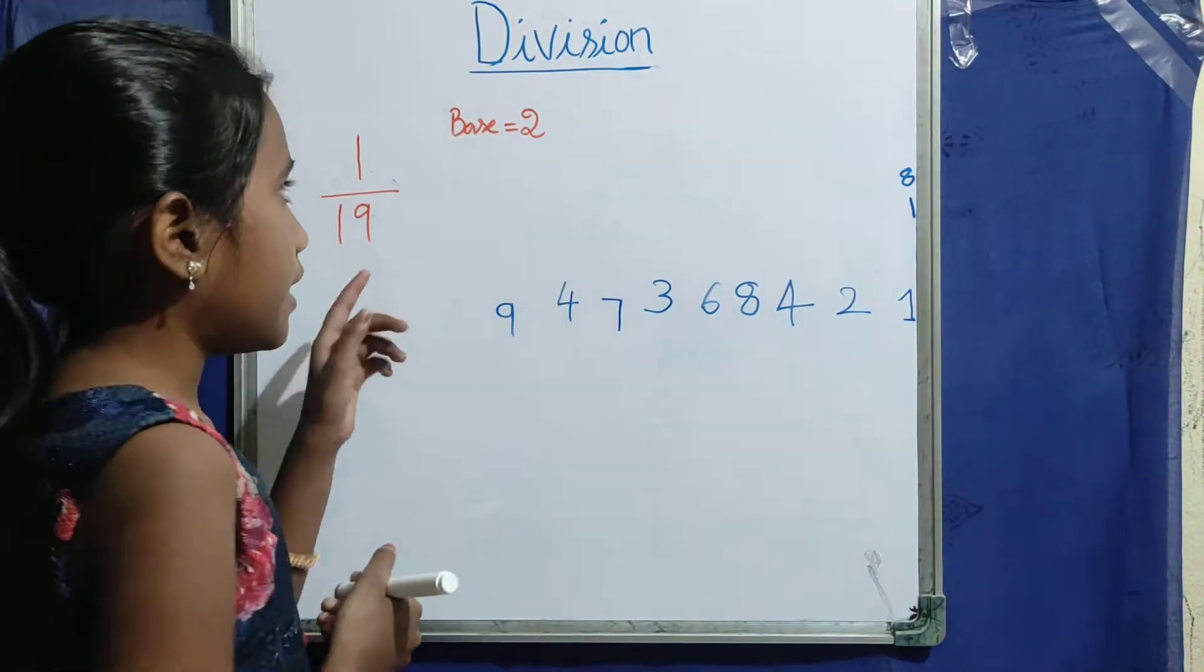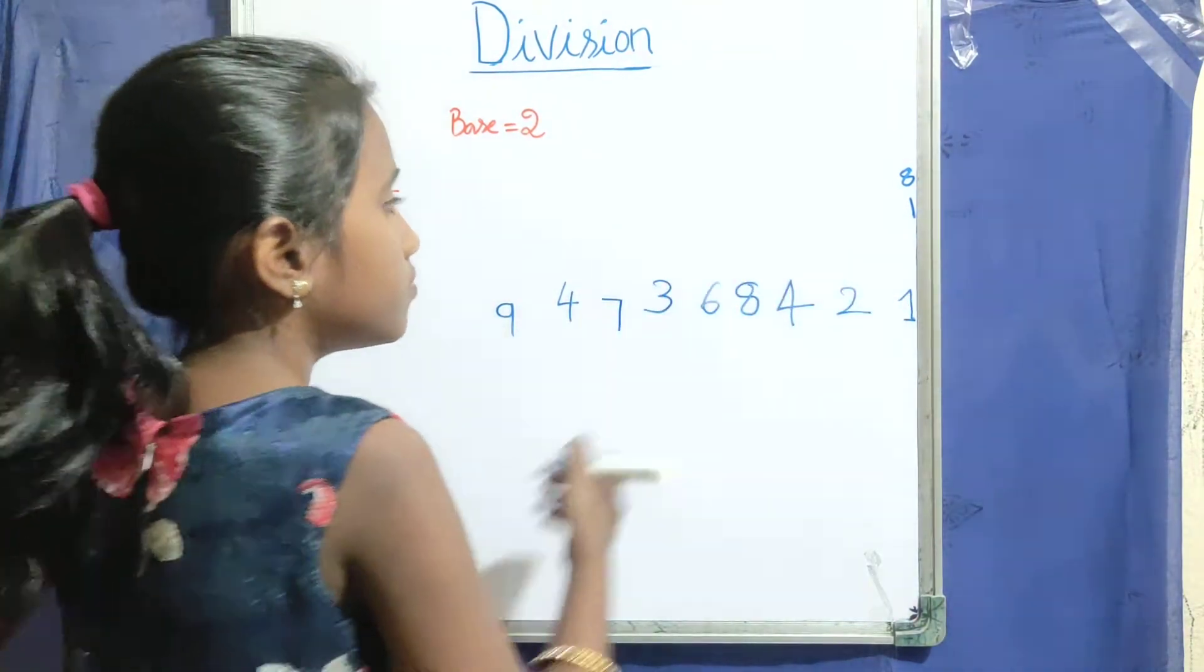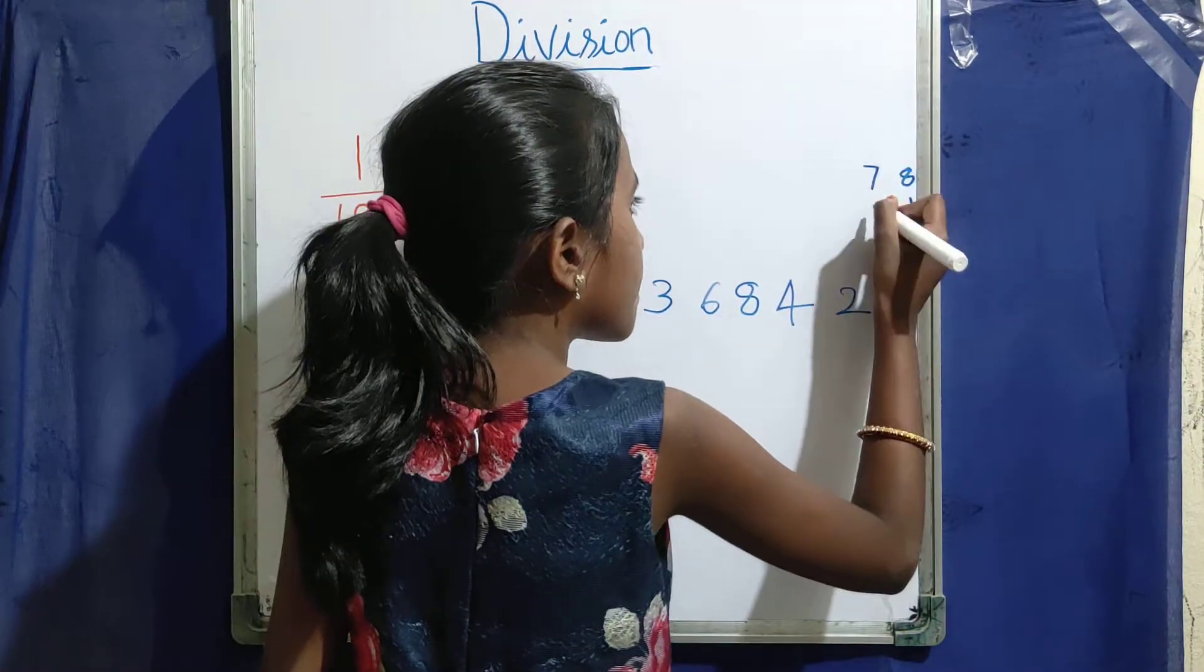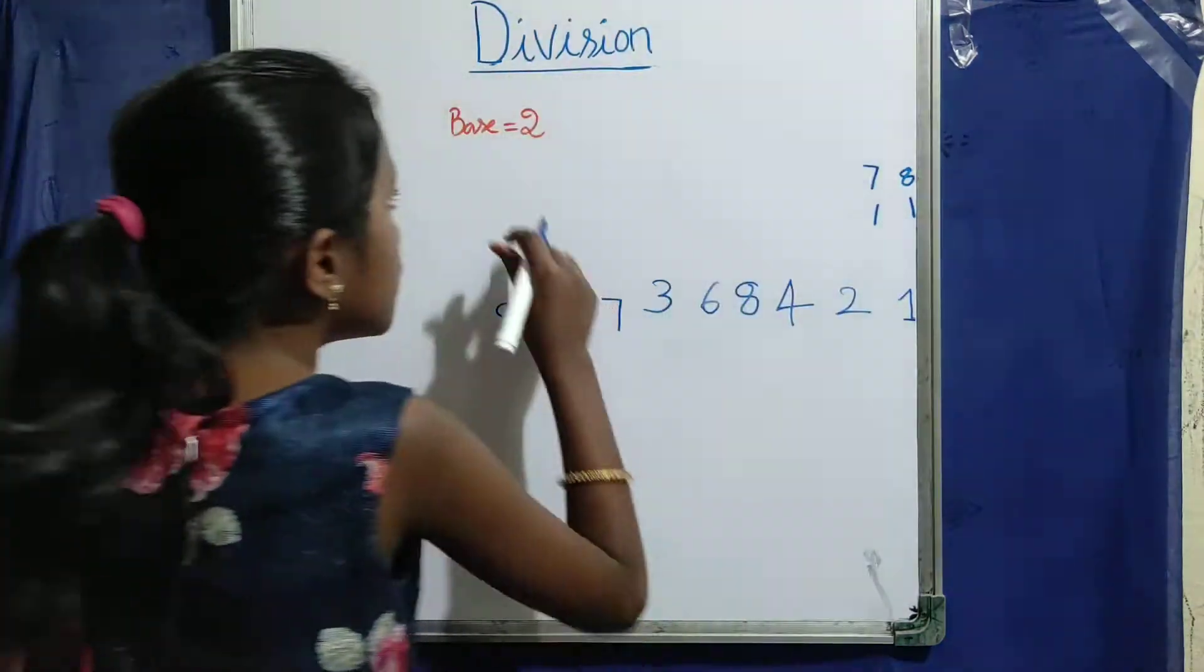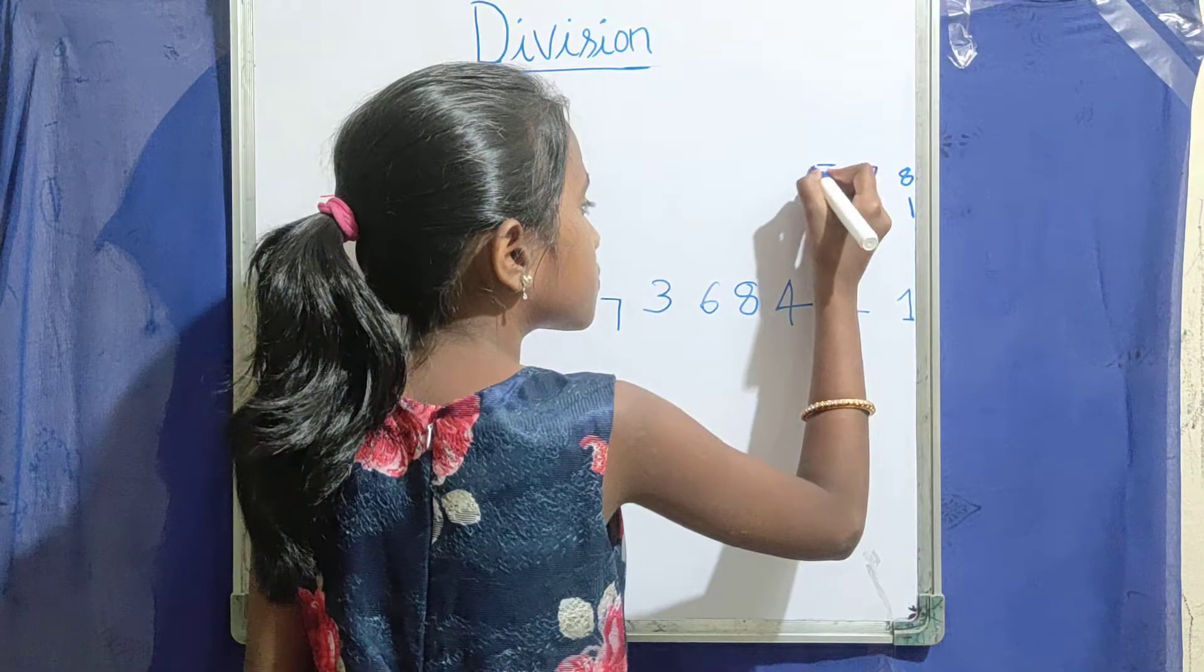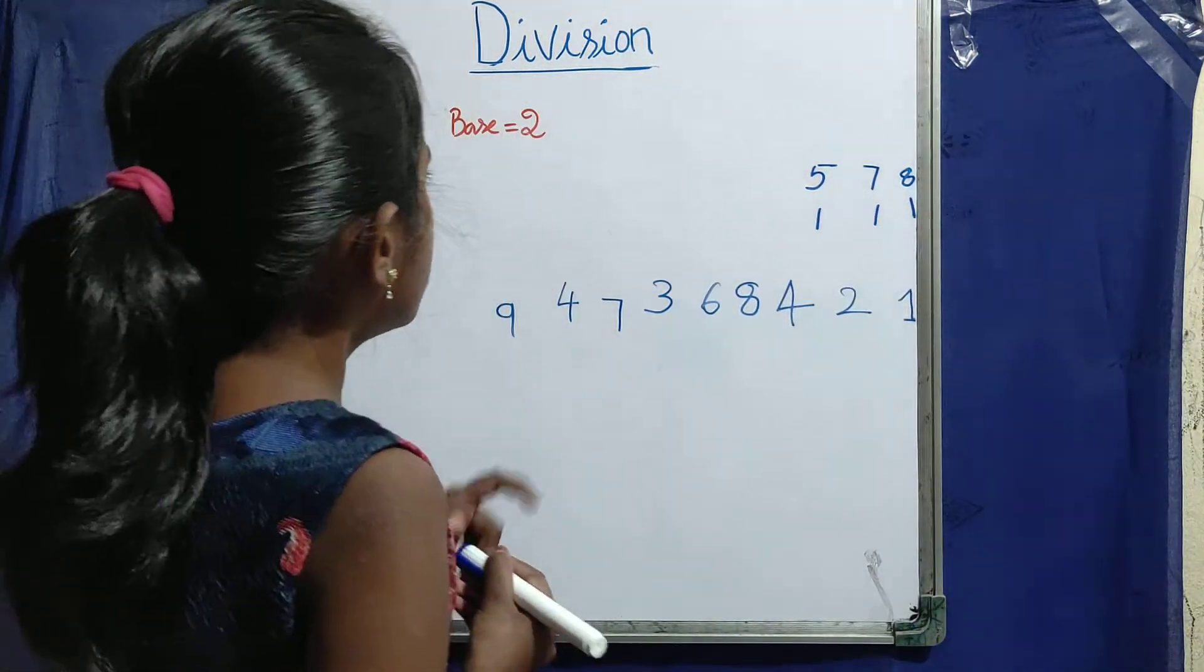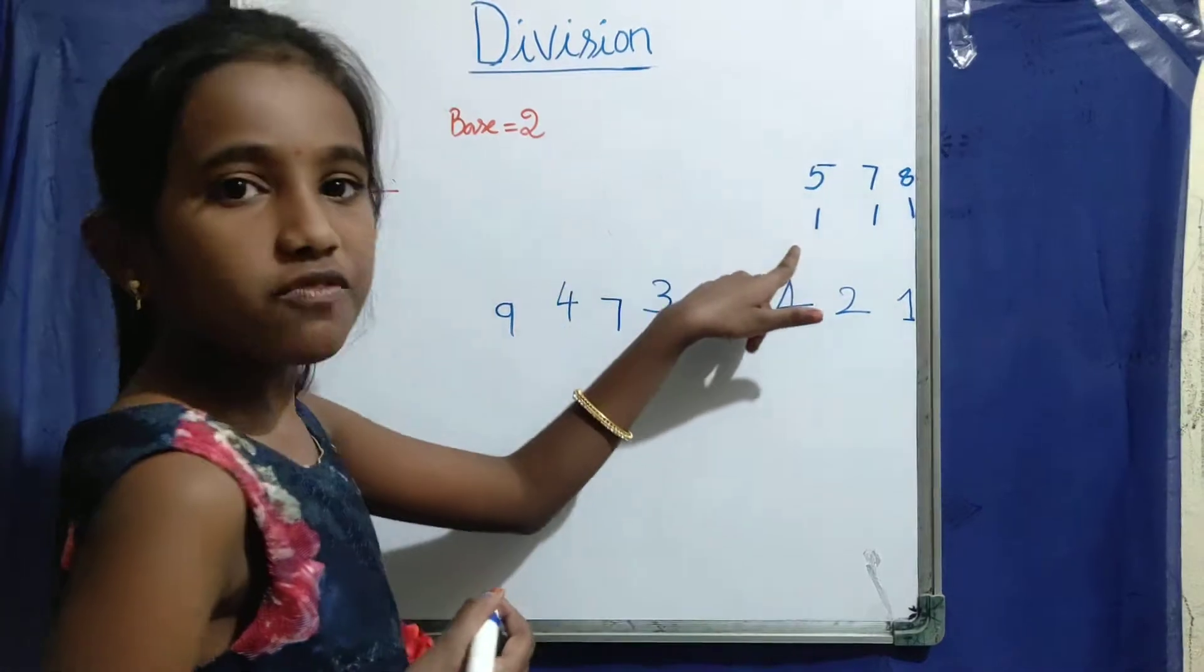9 twos, 18. Next. 8 twos, 16. Plus 1, 17. 7 twos, 14. Plus 1, 15. 5 twos, 10. Plus 1, 11.